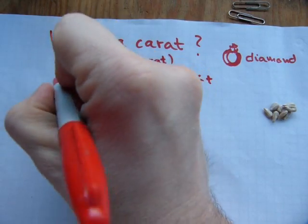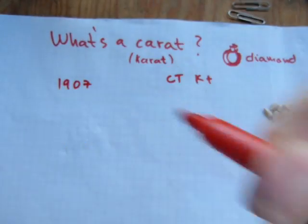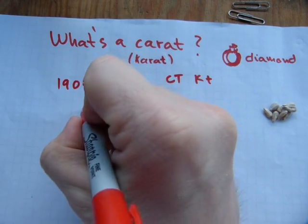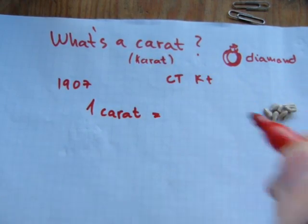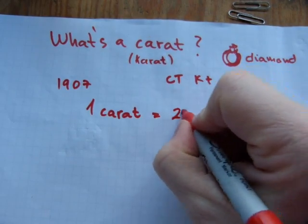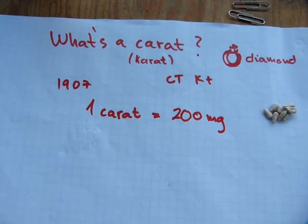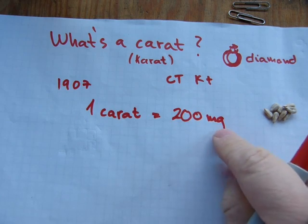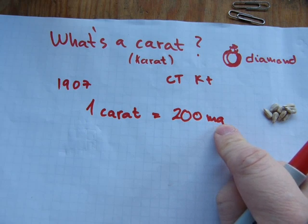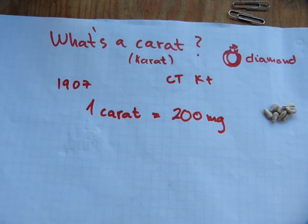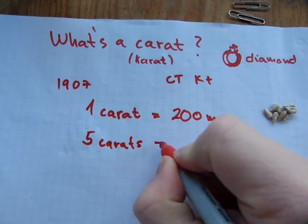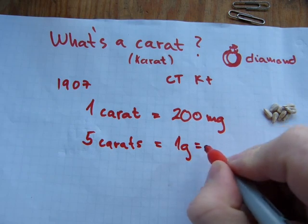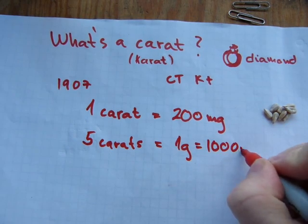In 1907, people sat down and determined that one carat be exactly equal to 200 milligrams. Consequently, because milli means a smaller part of a gram, that means that five carats weigh as much as one gram, or a thousand milligrams.